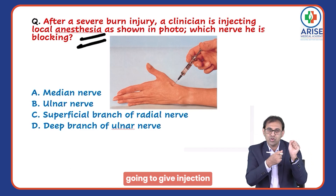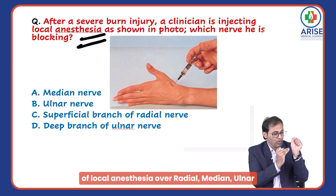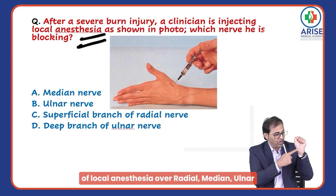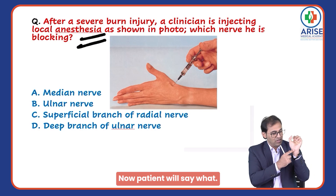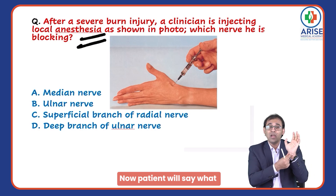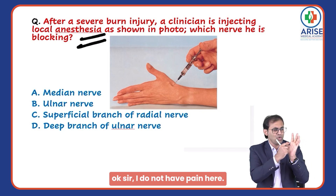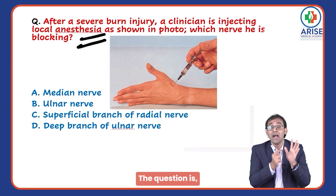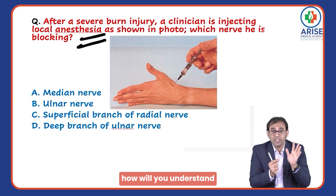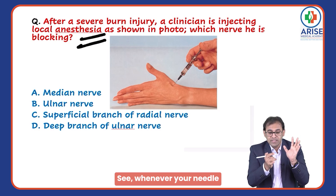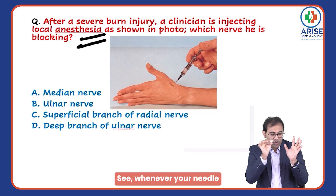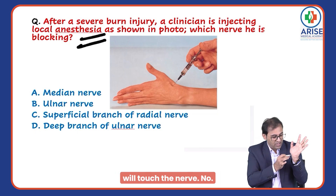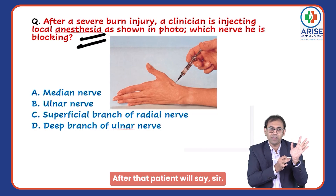So whenever you give an injection of local anesthesia over the radial, median, and ulnar nerves, the patient will say they no longer have pain there. The question is: how will you understand that you are exactly on the nerve? Whenever your needle touches the nerve, the patient will report something specific.